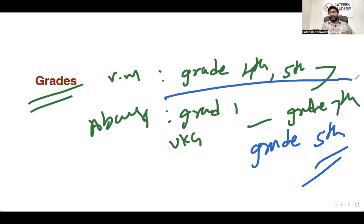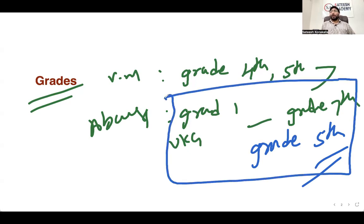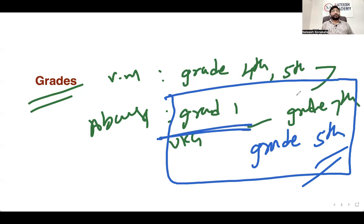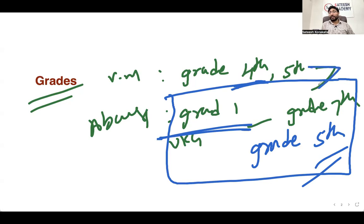So Abacus is for grade 1 to grade 7, and Vedic Maths — which I call basic Maths here — is for grade 4th and above. That's the grade distinction between the two programs.